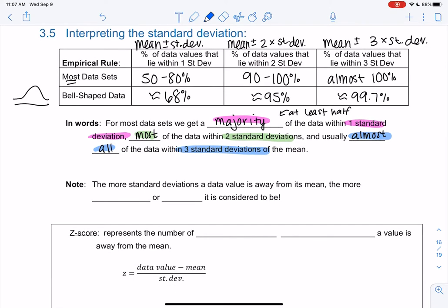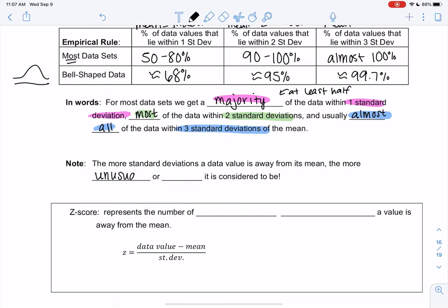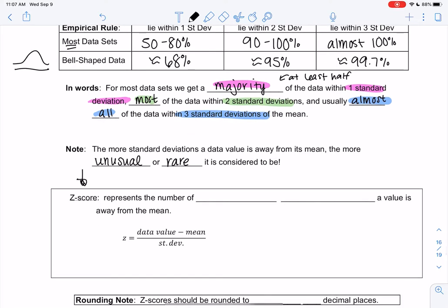And then the number of standard deviations data is—we're going to measure that in a second, but the more standard deviations a data value is away from the mean, the more unusual or rare it is. That should make sense, right? As we get farther from the mean, it's less likely. And so how are we going to measure that? We're going to use this thing called a z-score to measure that.